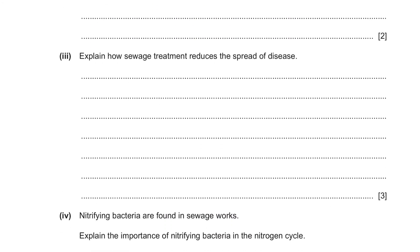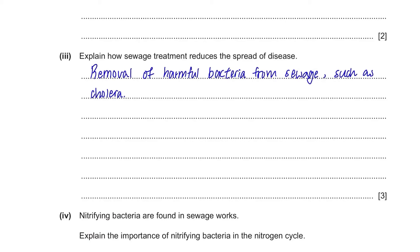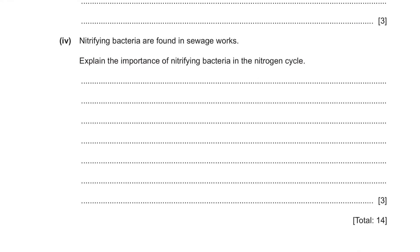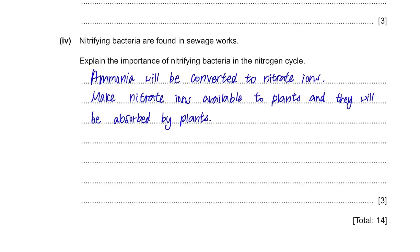Explain how sewage treatment reduces the spread of disease. The first step is removal of harmful bacteria from sewage — such as cholera — stopping the spread of pathogens via water. Bacteria can be removed using chlorine or chemical treatment. Nitrifying bacteria are found in sewage works. Explain their importance in the nitrogen cycle: ammonia found in sewage is converted by nitrifying bacteria to nitrate or nitrite ions, which are made available to plants. Plants absorb them, and nitrate ions are used to make amino acids.